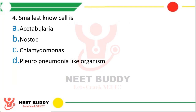Question number four. Smallest known cell is: option A Acetabularia, option B Nostoc, option C Chlamydomonas, or option D Pleuropneumonia-like organism, also known as PPLO. The correct answer is option D — PPLO.